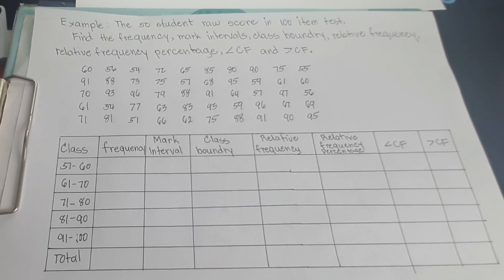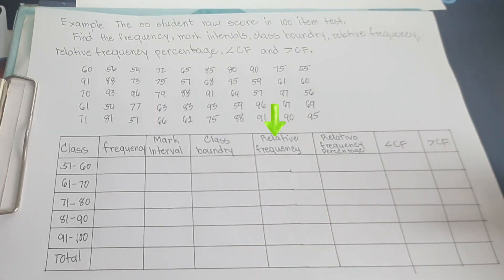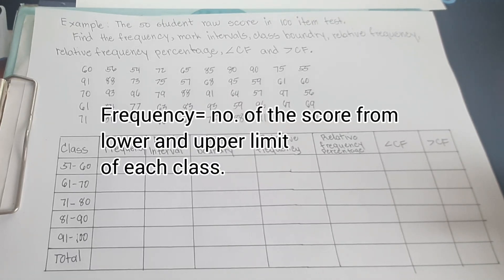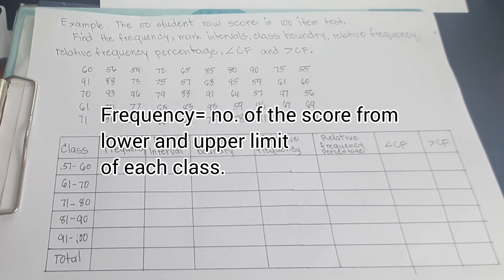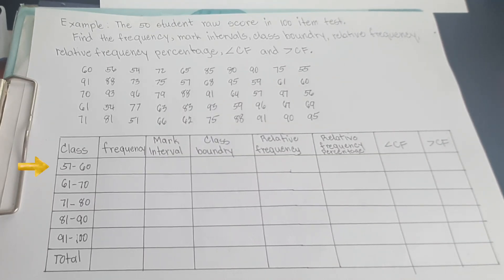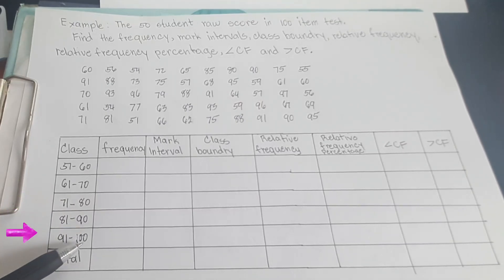Here are the numbers of the students and the scores in the 100-item test. Since the classes were given, we only need to find the frequency, the mark interval, class boundary, relative frequency, relative frequency percentage, less cumulative frequency, and more than cumulative frequency. The frequency is equal to the number of scores from the lower and upper limit of each class. The classes are 51–60, 61–70, 71–80, 81–90, and 91–100 — five categories in total.